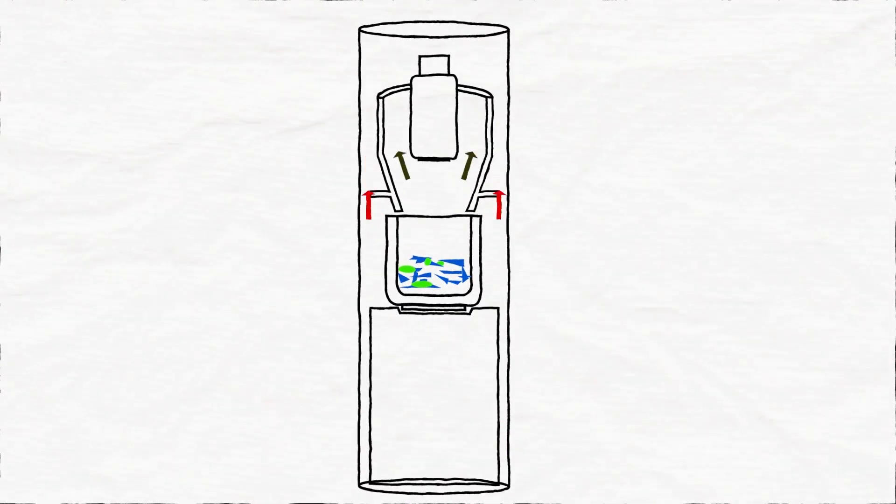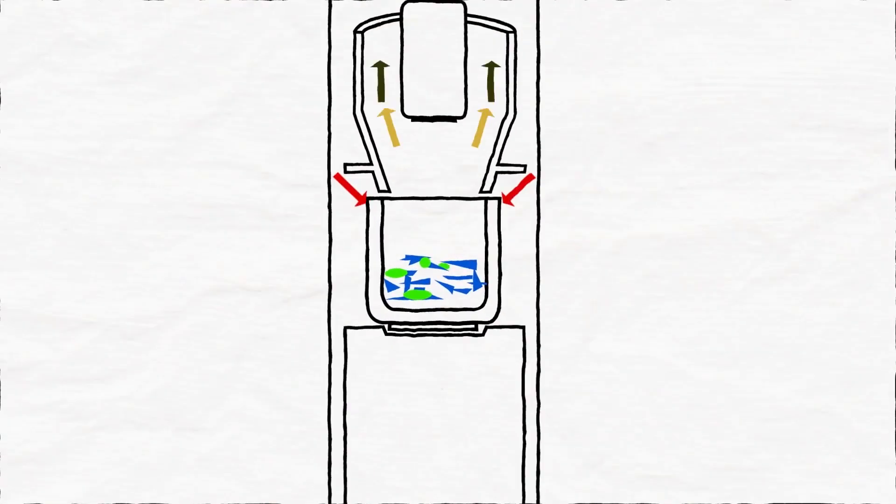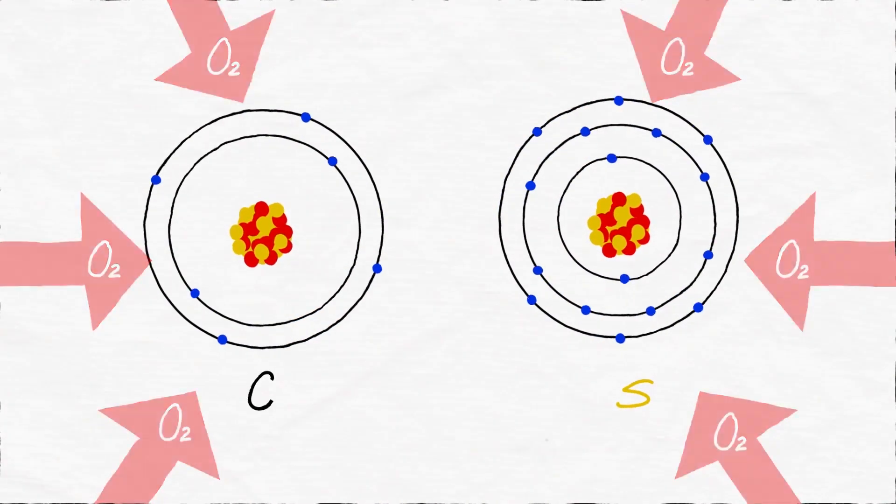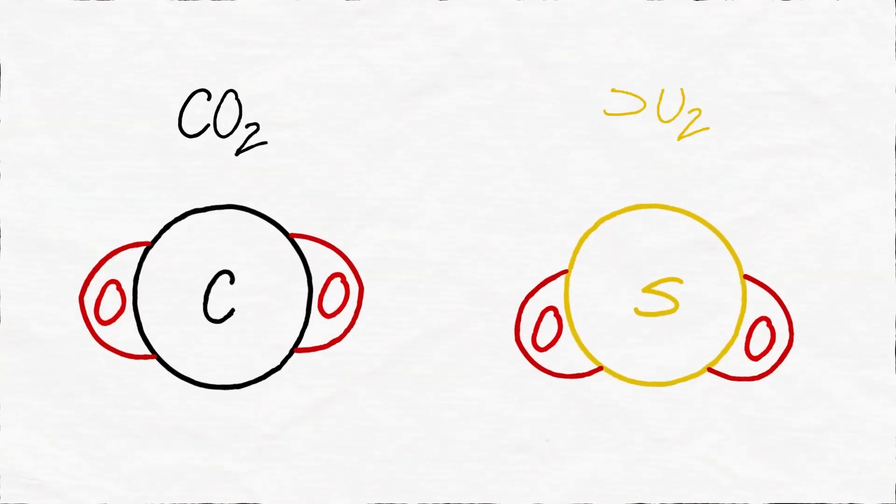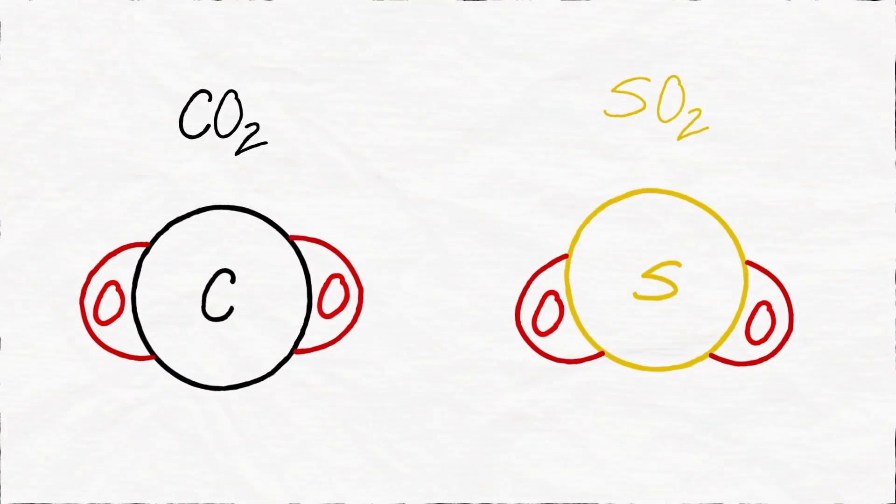While the sample melts, oxygen flows through the induction furnace. The carbon and sulfur in the sample react with pure oxygen, forming carbon dioxide and sulfur dioxide, which are much easier to analyze.